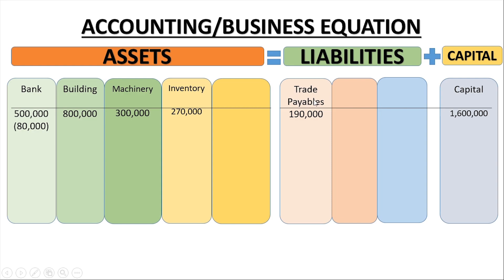Trade payables refer to suppliers from whom we purchase goods we intend to sell, i.e., trading purchases on credit. Other types of payables — such as specific named payables — will be discussed later.